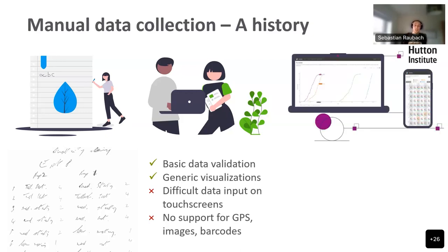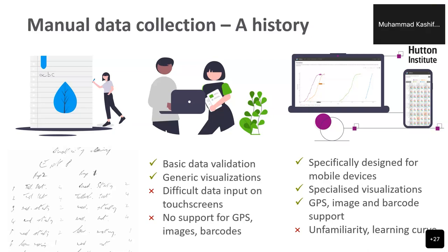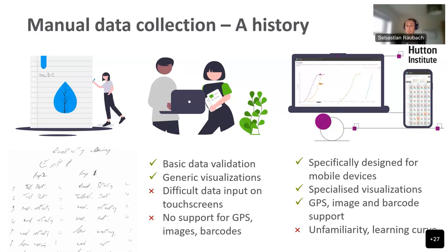Additionally, there's no support for things like GPS tracking, image tagging, and barcode support. Which leads me to the latest development in this area — these apps have been around for a few years now, and those are specifically designed apps for phenotypic data collection out in the field. They have very specialized visualizations to highlight patterns in the data and potential outliers. The apps are also designed to work well on mobile devices, but in the case of GridScore, they also work well on the desktop PC or laptop. They also have support for GPS tracking and barcode support. The downside is that they might be unfamiliar to people, so there might be a learning curve initially. That's exactly why we've got training like this — to explain the tools to people so they are more familiar with how they work.